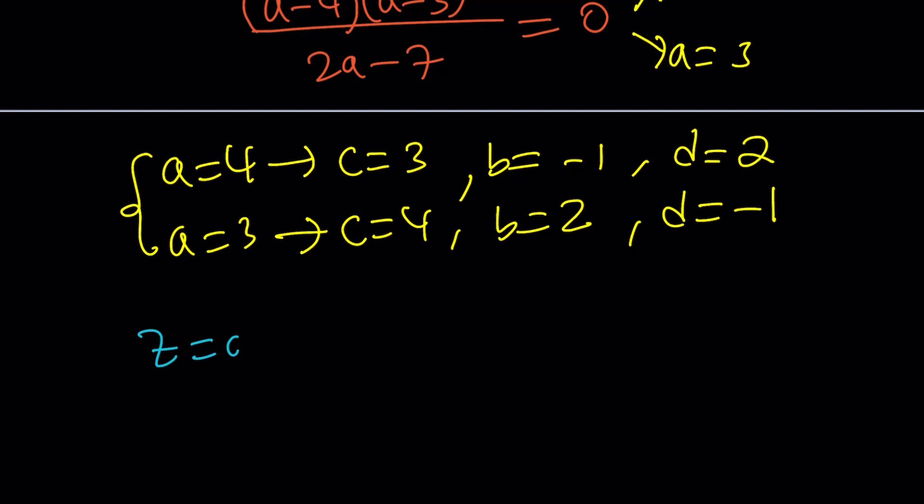Z is equal to A plus BI. And basically, that can be written as 4 minus I. Or, looking at the second set of values, 3 plus 2I. And W can be C plus DI. And if C and D are taken as 3 and 2, it becomes 3 plus 2I or 4 minus I.